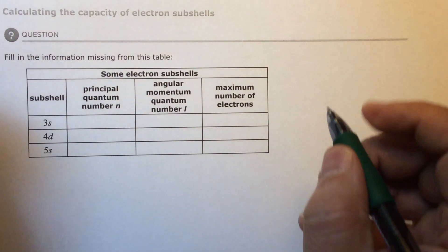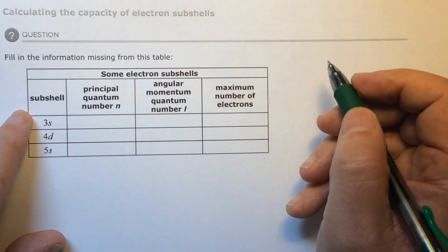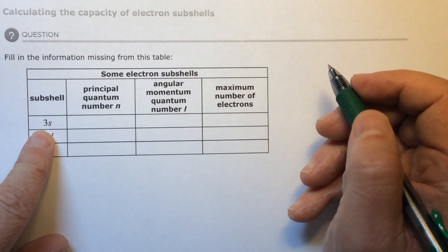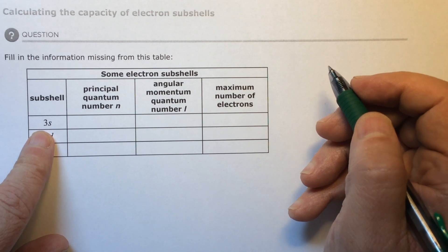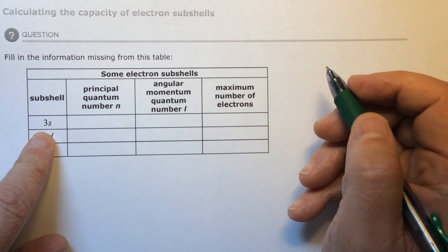So if you remember that a subshell is going to have two parts. It's going to have an N equals, so a period row, a period, a row number or a period number,